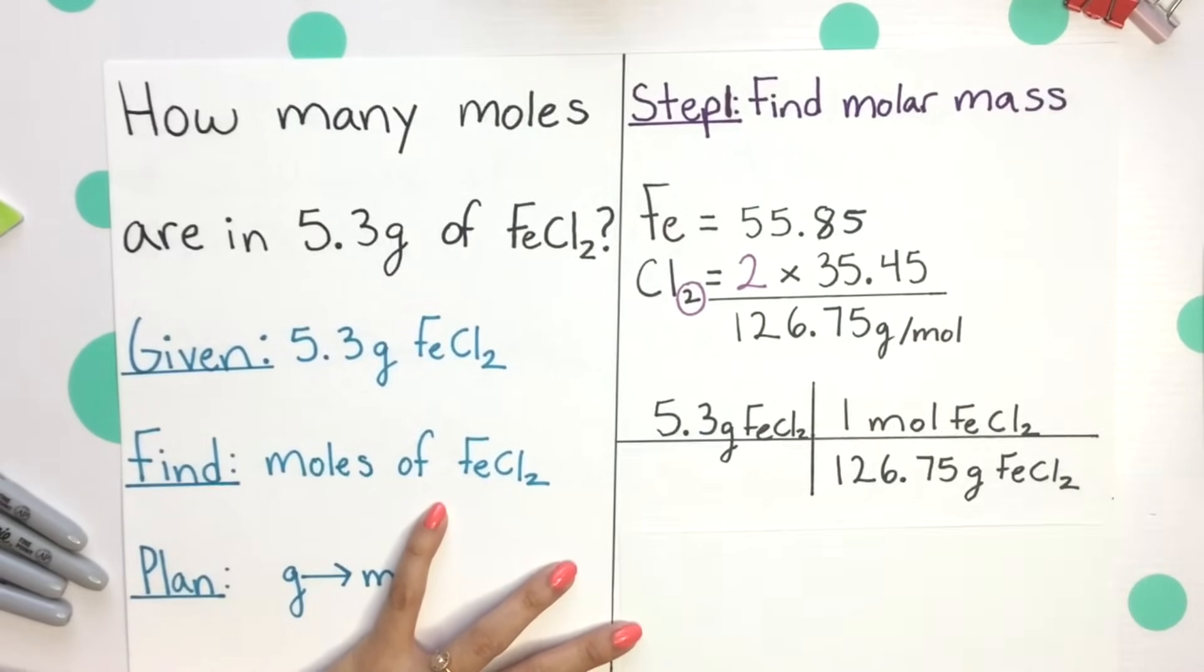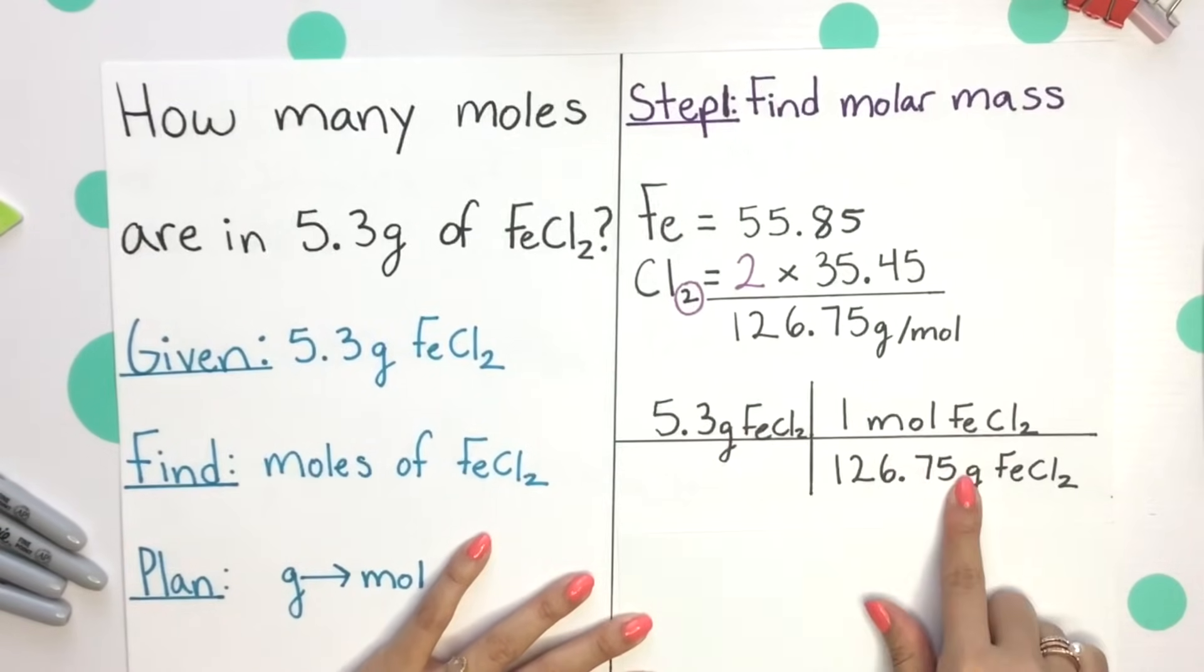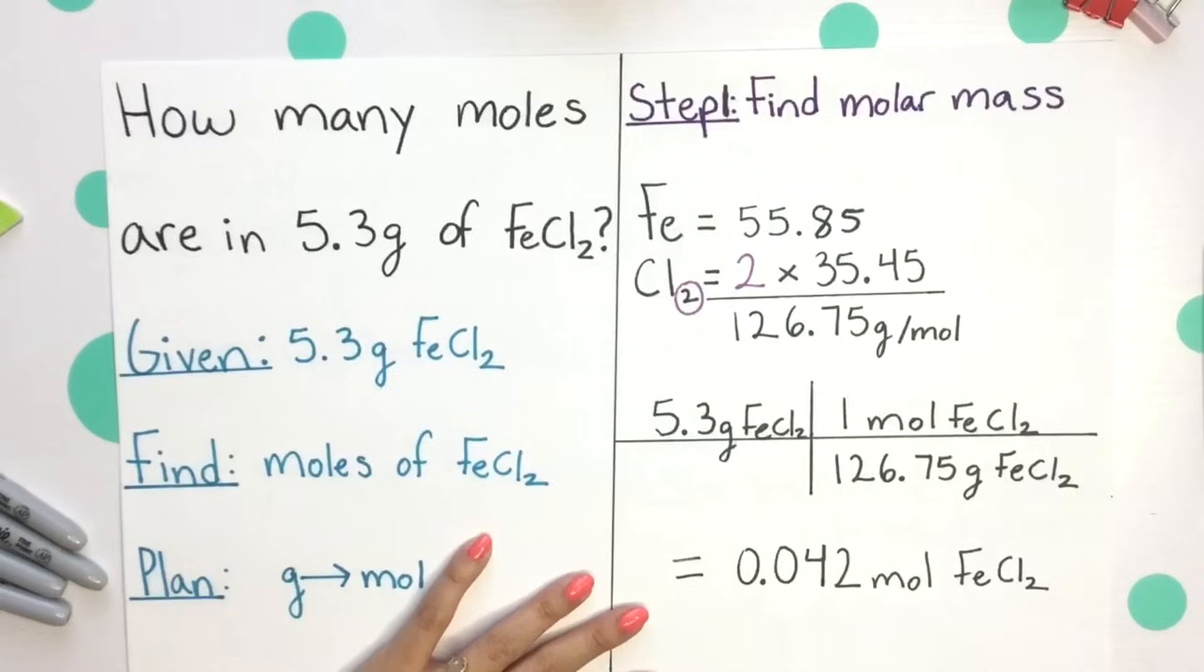Let's set this up. Always starting with your given, aligning your units across from each other so they can cancel, and we'll be left with moles of iron chloride. Our final answer is 0.042 moles of iron chloride.